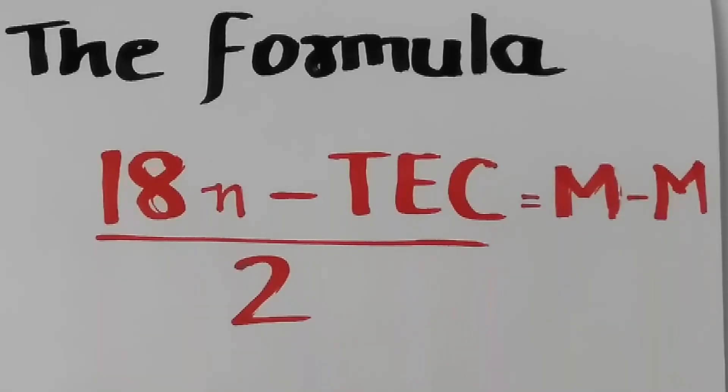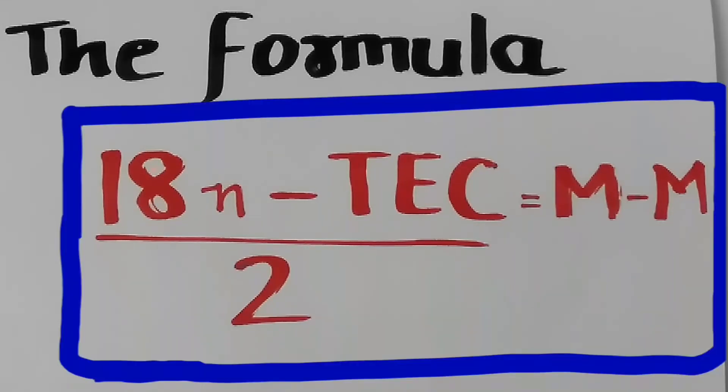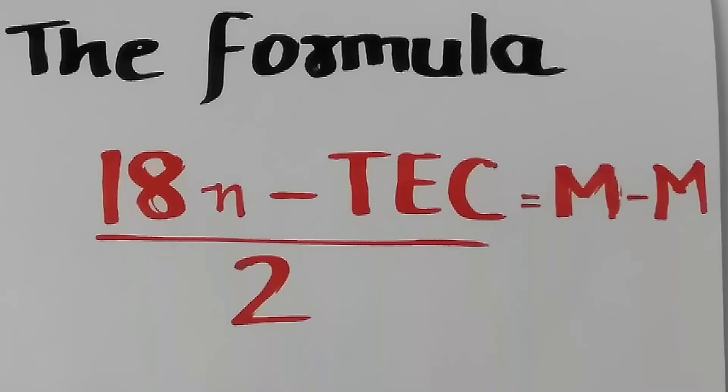The formula to calculate the bond order is as follows: 18n minus total electron count divided by 2. Here, n is the number of metals.